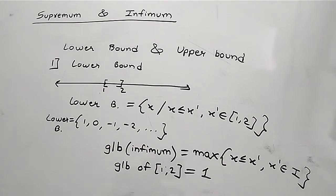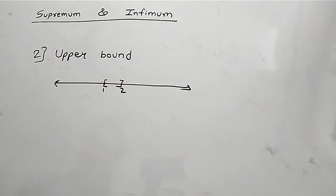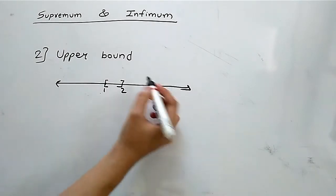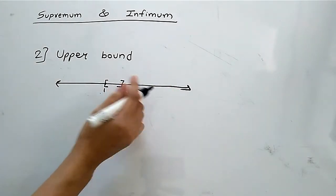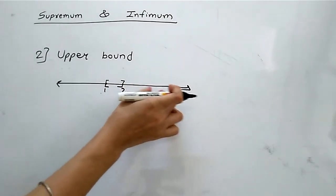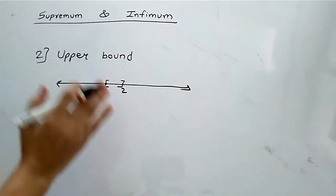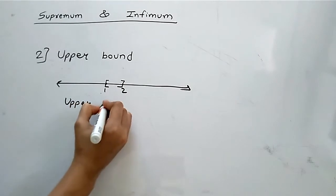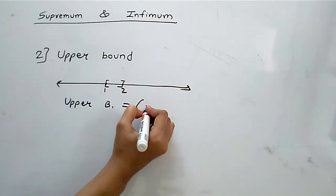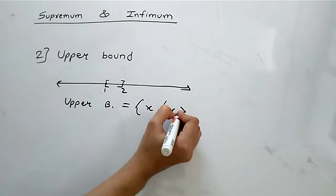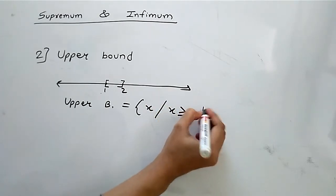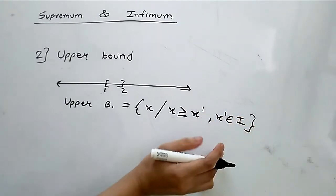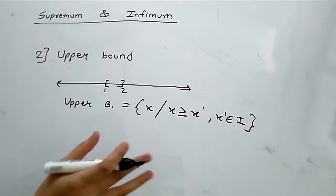Now let's see what is the upper bound. The value 2 and everything greater than 2 — all values including 2 and greater — will be called the upper bound. The upper bound is defined as the set of all x such that x is greater than or equal to x', where x' belongs to the closed interval I.